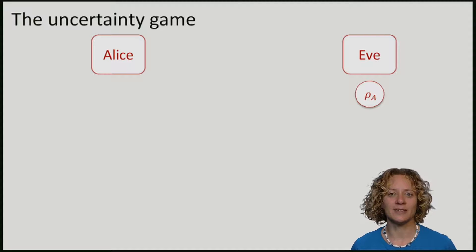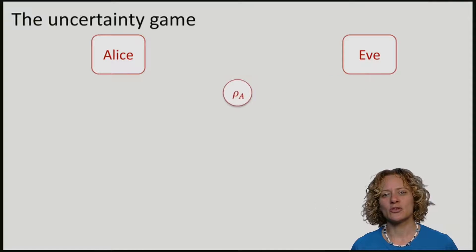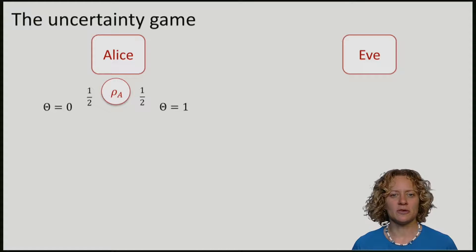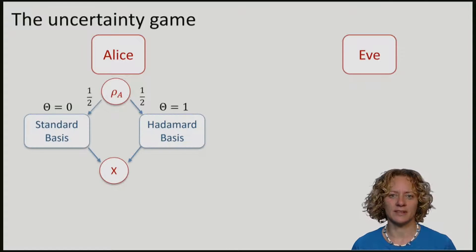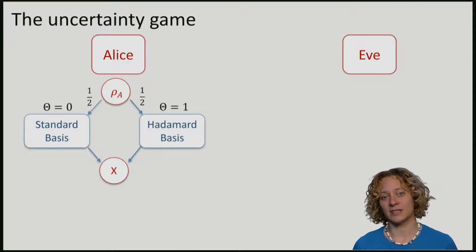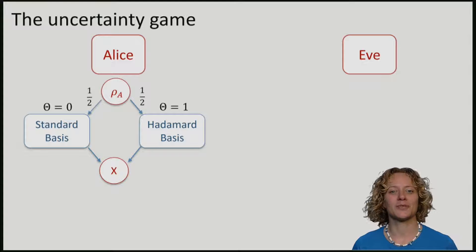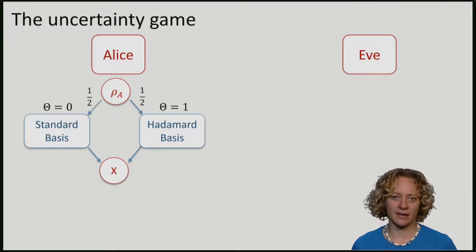Eve sends the state to Alice, who randomly chooses a bit theta. Theta equals zero with probability half and theta being one with probability half. If she chose theta being zero, she is going to measure in the standard basis. For theta equals one, she is going to measure in the Hadamard basis. She will get one bit of measurement outcome, which I will call x.